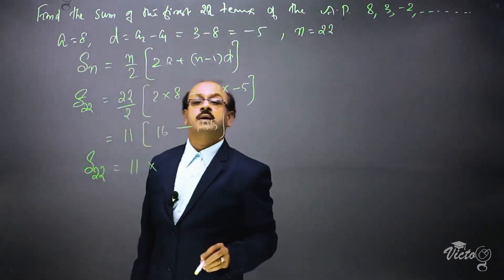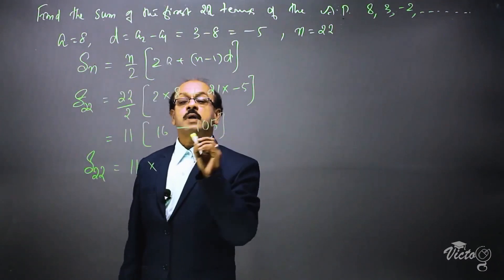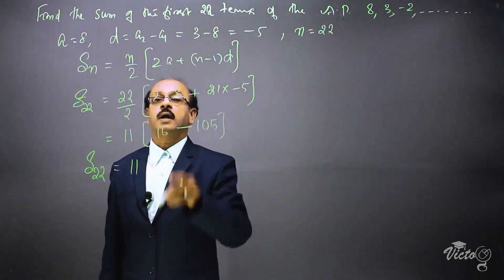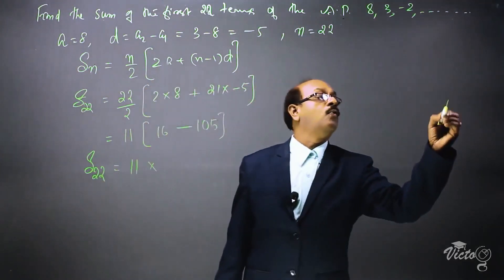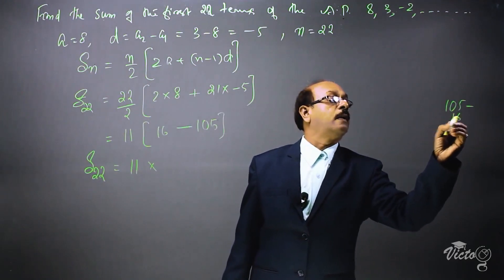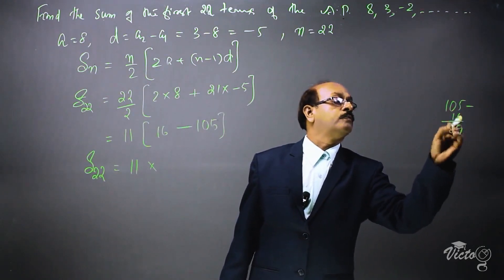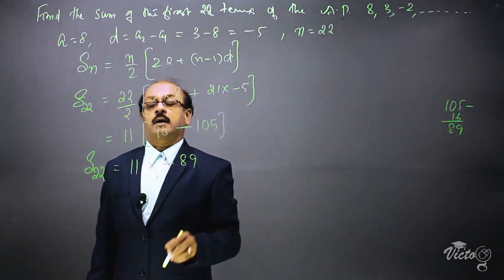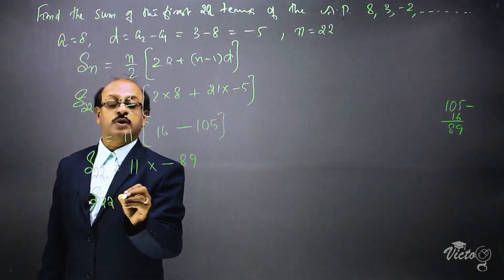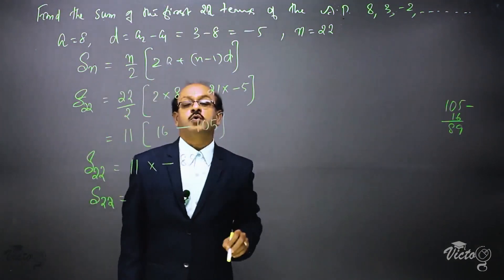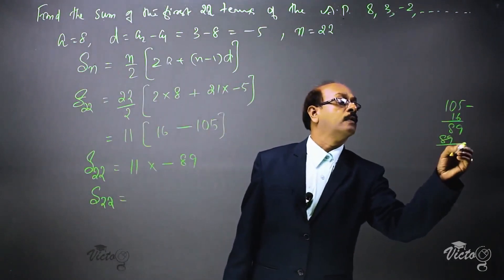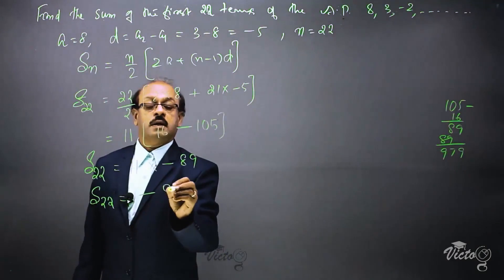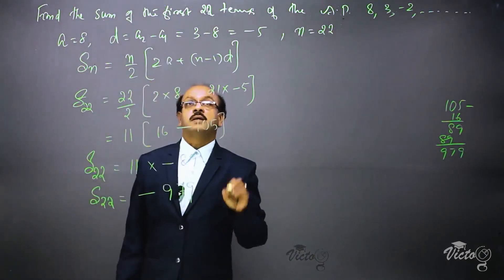We compute 16 minus 105. Since 105 is the larger number, the result is minus 89. Therefore S22 equals 11 into minus 89, which gives minus 979. The sum of the first 22 terms is minus 979.